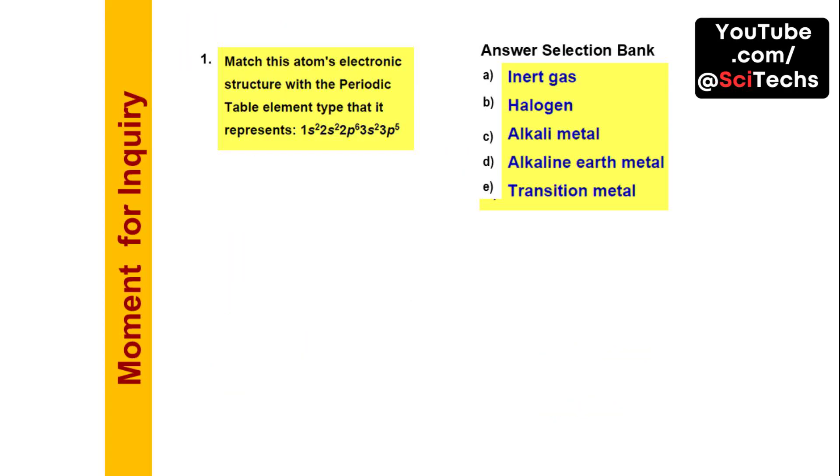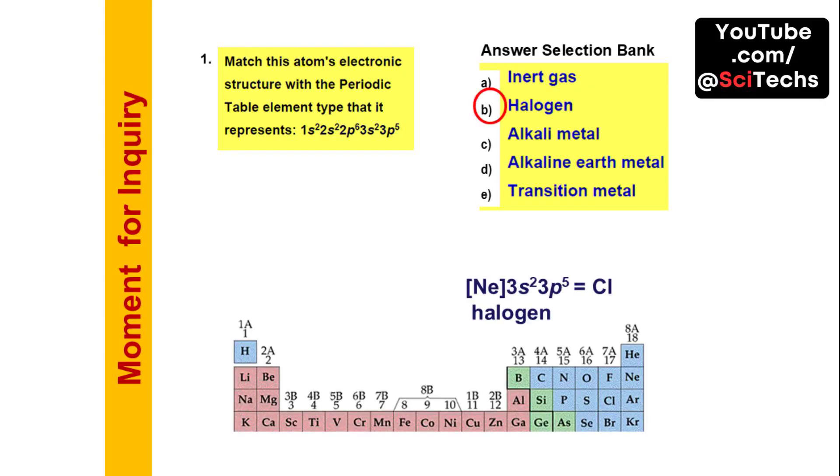Let's take a moment for inquiry. Match this atom's electronic structure with the periodic table element type that it represents: 1s² 2s² 2p⁶ 3s² 3p⁵. The correct answer is halogen. This electronic configuration corresponds to a chlorine atom, which is a halogen.